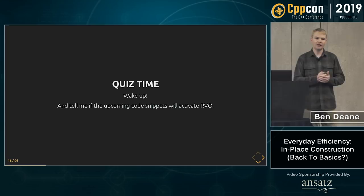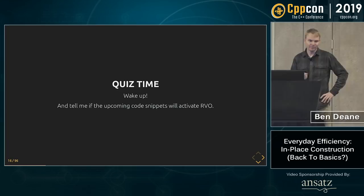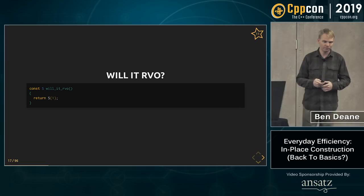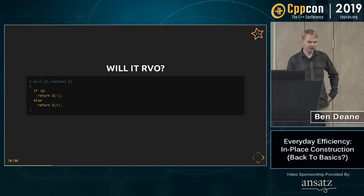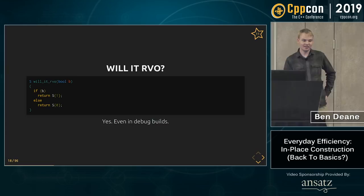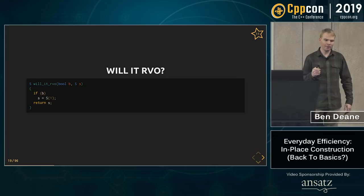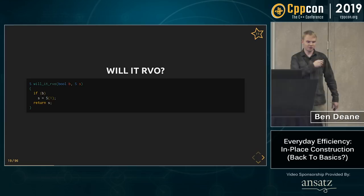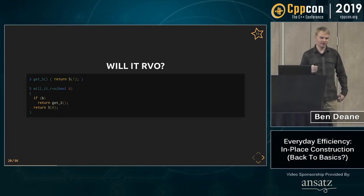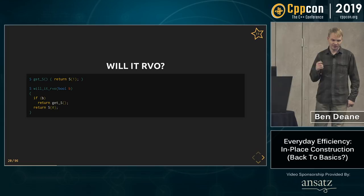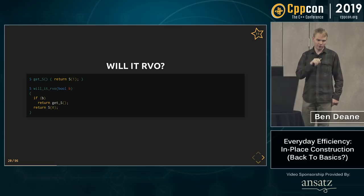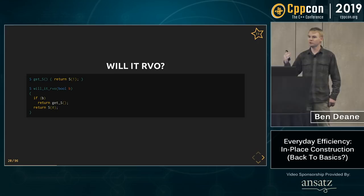Now I know it's late on a Thursday, so I'm going to ask you some questions. Will this RVO? Yes — we're returning a temporary, plain and simple. How about this? Yes — still returning a temporary. Returning a temporary is in general much more reliable than returning a named thing and generally works even in debug builds. How about this one? No — it's a function argument, you're not constructing it. How about this? Yes in both cases — you're returning an rvalue; you can chain RVO down the call stack.